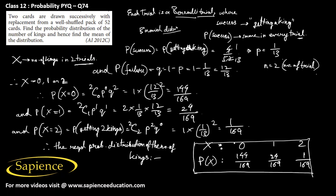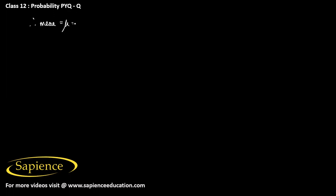To find the mean of the distribution, the mean — also called mu or the expectation E(X) — is given by the summation of p_i times x_i.